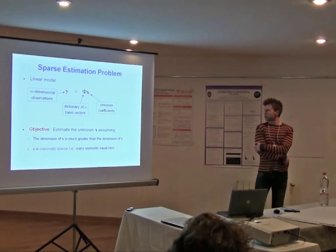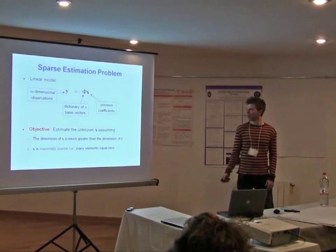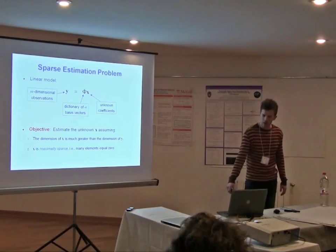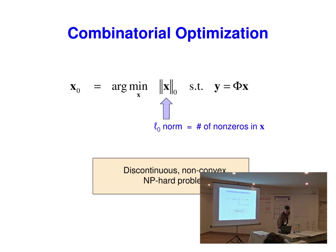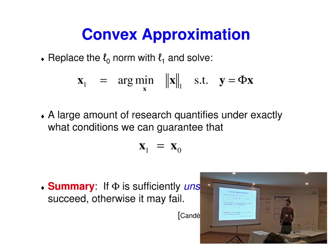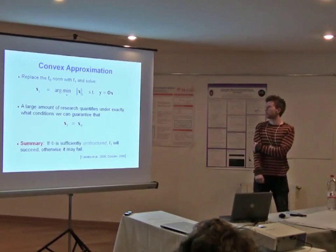The dimension of x, as I said, we assume is much greater than the dimension of y, so there's an infinite number of solutions. We're looking for the maximum sparse solution — most elements of x we'd like to be exactly equal to zero. This is a combinatorial optimization problem, minimizing the L0 norm, the count of non-zero elements. It's NP-hard, discontinuous, and non-convex. So the most common thing people do is find the closest convex approximation, which is minimizing the L1 norm. There's been a huge amount of research in the past 10 to 15 years quantifying exactly what conditions guarantee that the L1 norm solution equals the L0 norm solution.